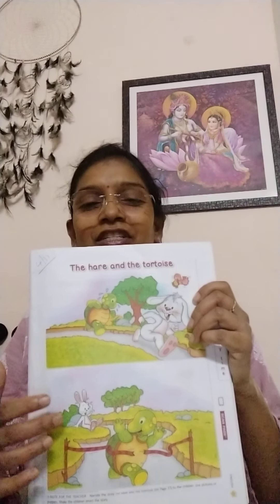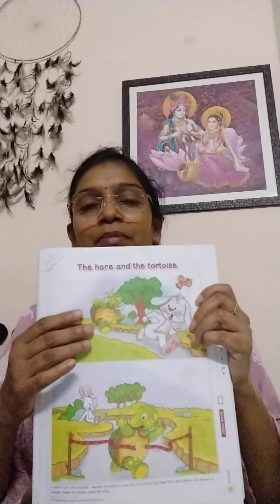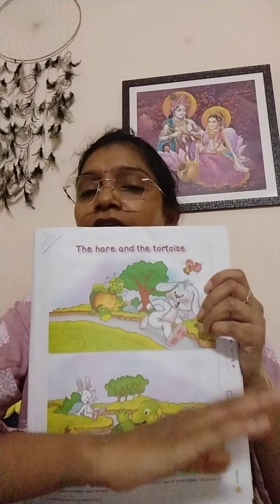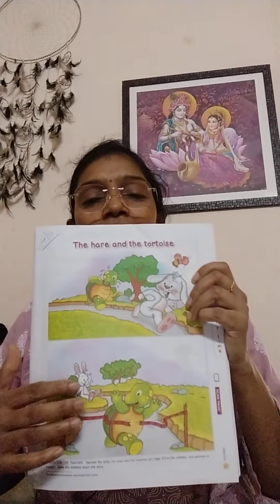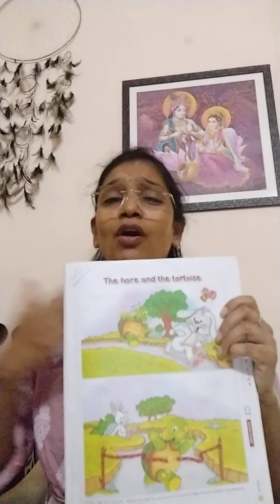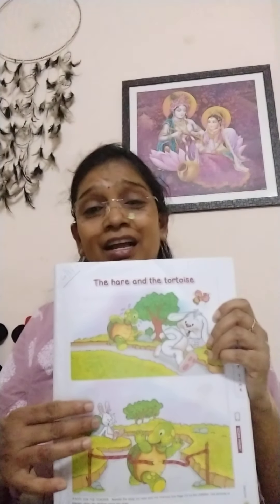The hare ran fast and looked back — tortoise is coming very slowly and is very far behind me. So I can take some rest under a tree, it was thinking. The hare took a small nap — a small sleep — under the tree, and went into a deep sleep. Meanwhile, the tortoise was walking, walking, walking because it wanted to win the race. The tortoise reached the goal. The hare woke up and saw — oh my god, tortoise reached the finish point. I lost my bet! The rabbit was very sad.